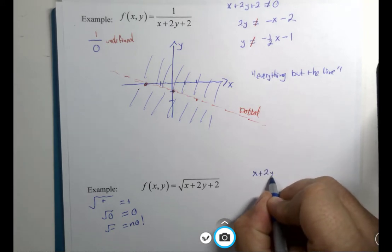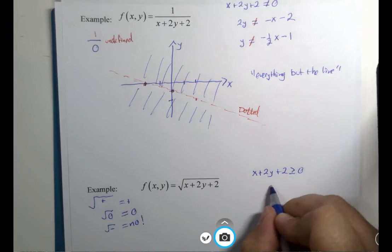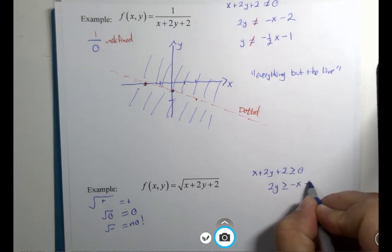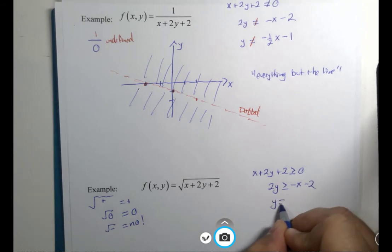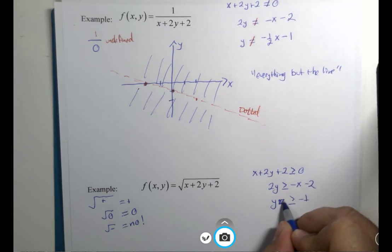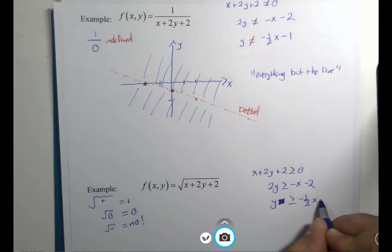This will turn into an inequality, x plus 2y plus 2 greater than or equal to 0, 2y is greater than or equal to negative x minus 2. So y is greater than or equal to negative 1/2x minus 1.